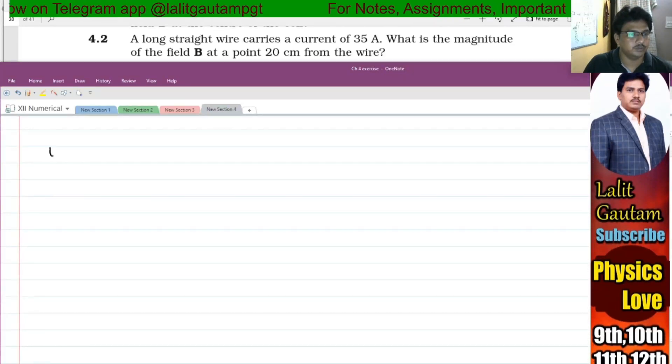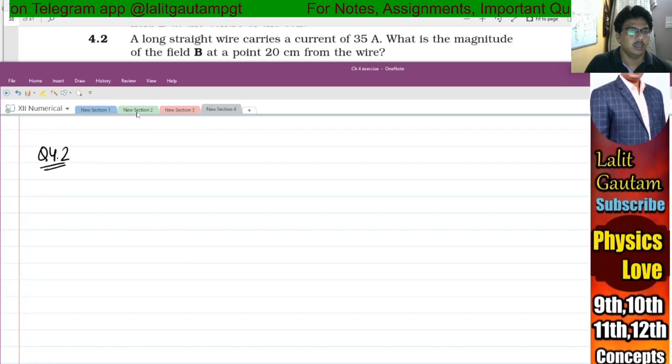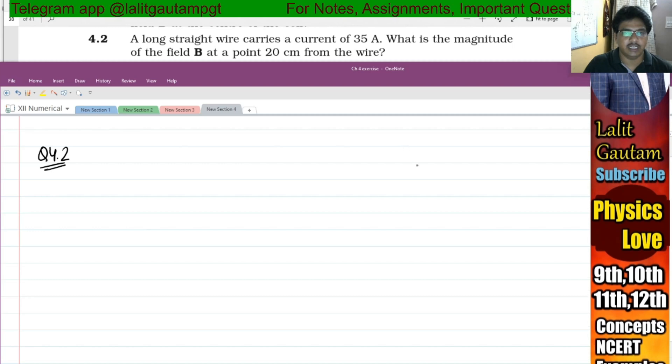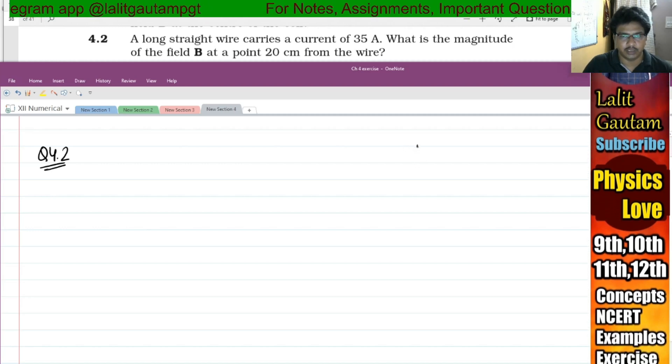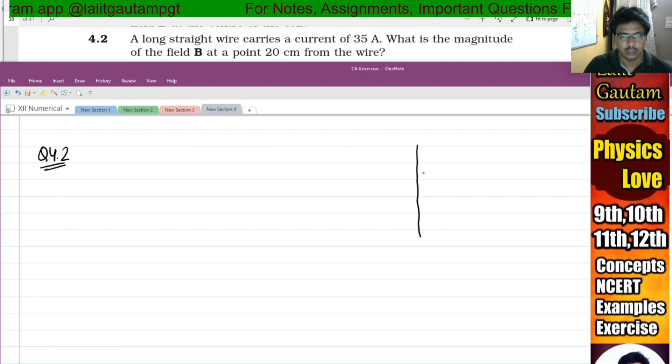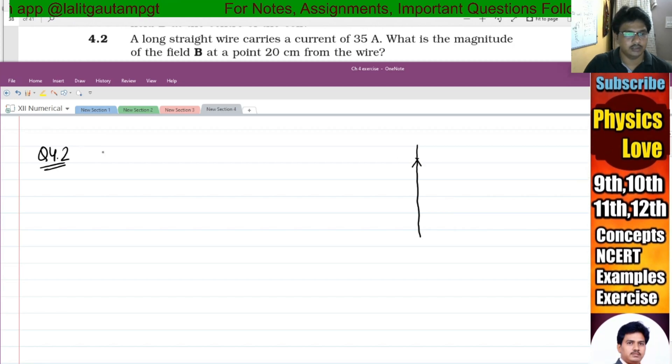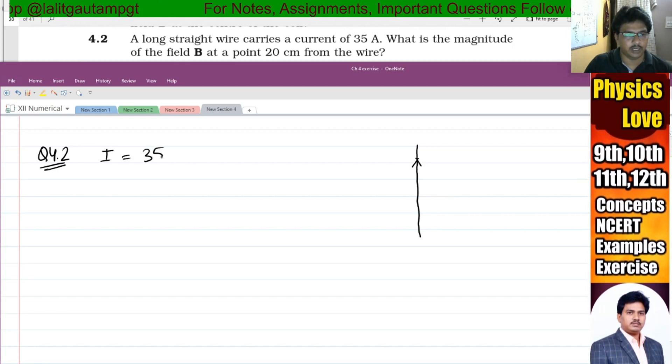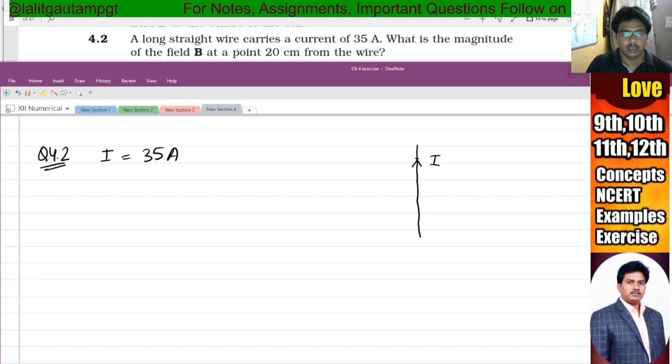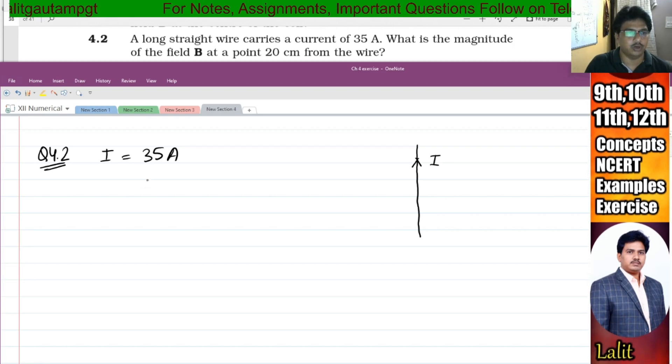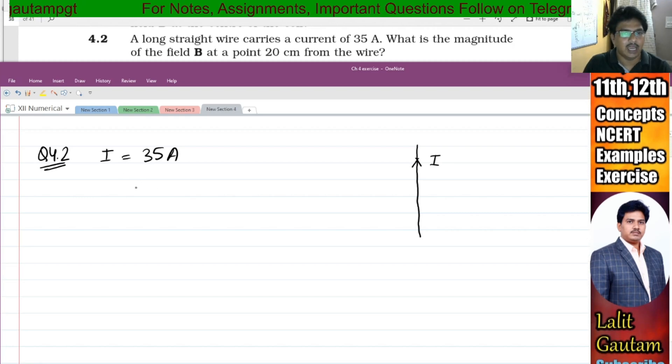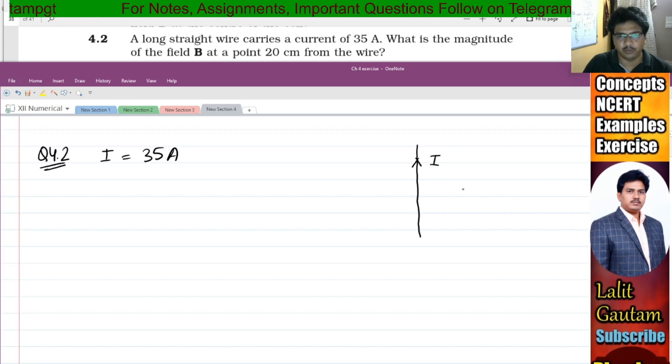Question number 4.2. A long straight wire carries a current of 35 ampere. This is the wire and here the value of current is 35 ampere. What is the magnitude of the magnetic field B at a point 20 centimeter from the wire?